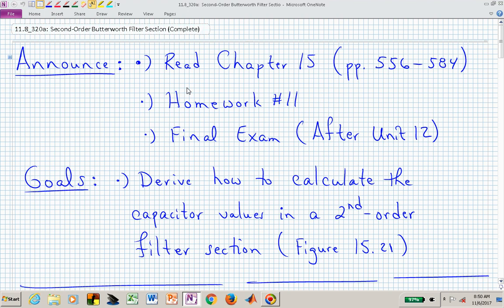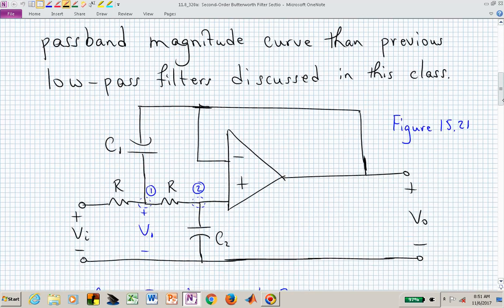Welcome back to ECE 320A. We're in unit 11, which is our active filter design unit, and homework in unit 11 is due at the end of this unit, and the final exam is at the end of the next unit. What we want to do in this video is actually understand how to select the capacitor values, and there are just two of those capacitors, C1 and C2, in a second order filter section to realize or achieve a quadratic representation.